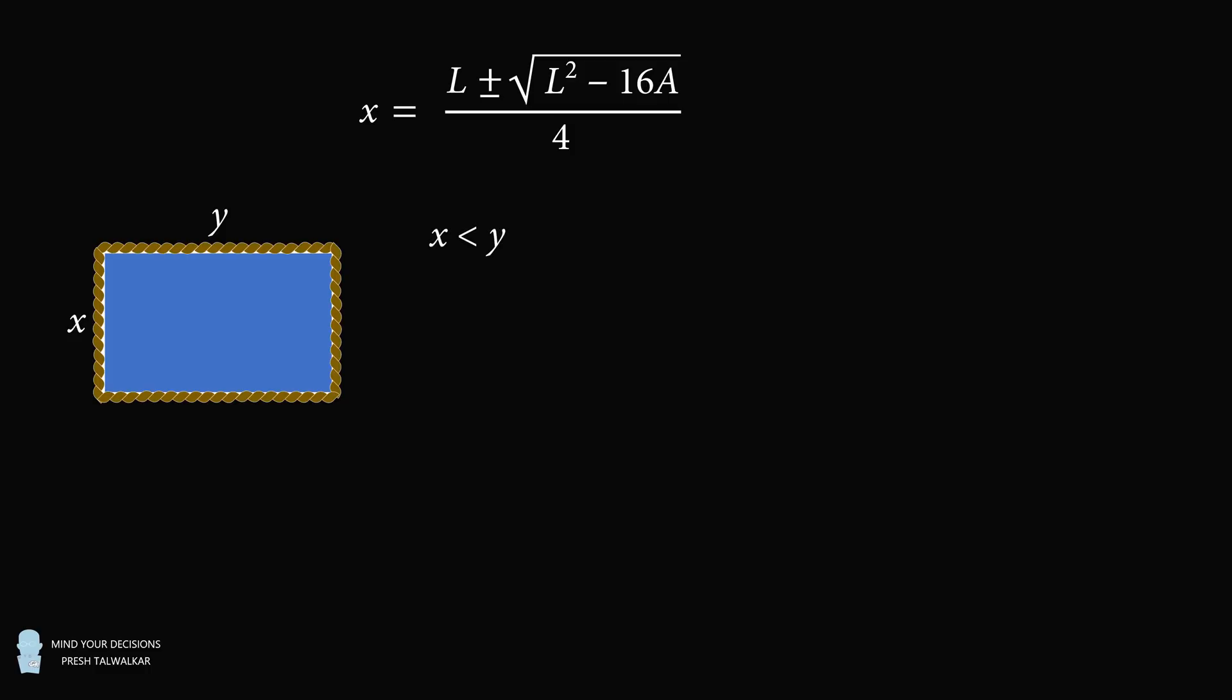So we have X which is less than Y. So there are two possible solutions to this quadratic equation. And the longer side, the plus solution, will correspond to Y. And the shorter side will correspond to subtracting the radical.